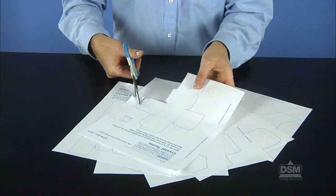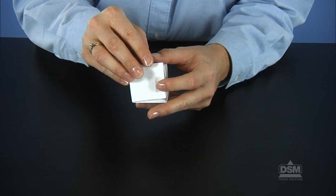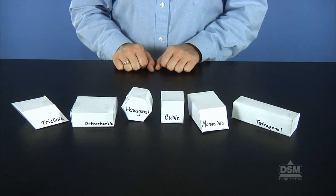Make an additional copy of Activity Sheet 7, Parts A-F, and assemble the paper crystals to serve as models. Display these crystal models in the classroom.